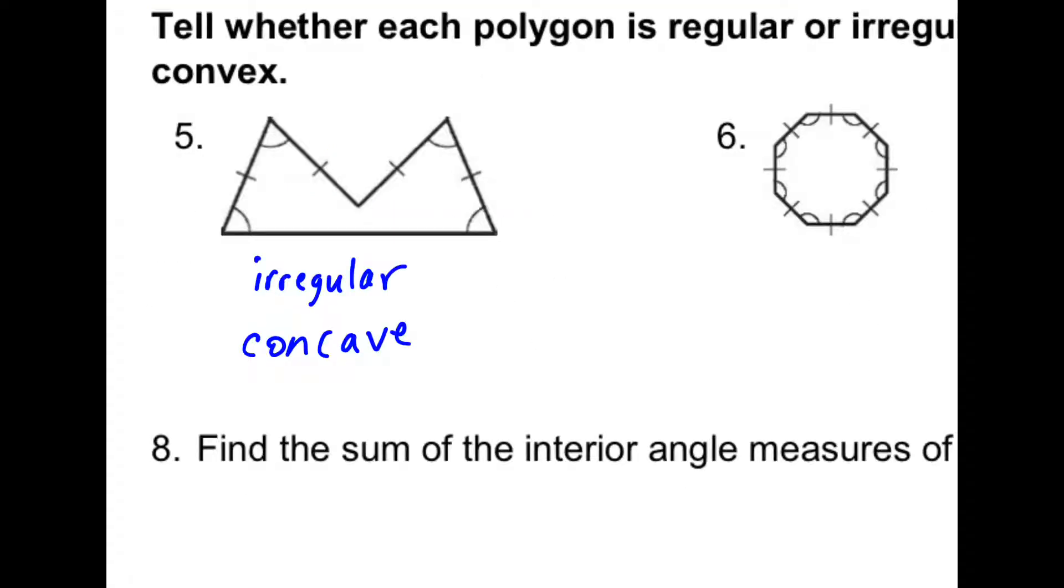Number five is irregular because this down here is not the same length as all the other sides, and it's concave because one of the diagonals exists outside of the shape, or this here caves in.